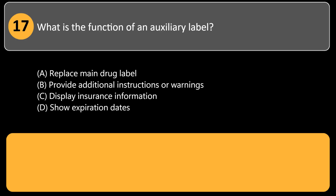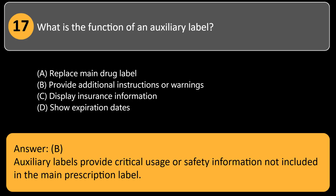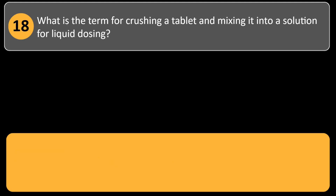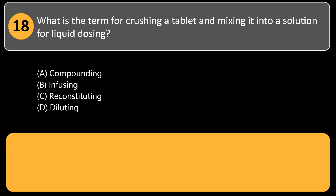What is the function of an auxiliary label? A) replace main drug label, B) provide additional instructions or warnings, C) display insurance information, D) show expiration dates. Answer: B. Auxiliary labels provide critical usage or safety information not included in the main prescription label.